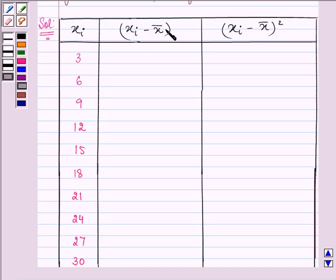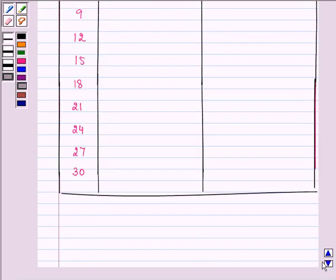Now to find out xi minus x bar, that is mean, firstly we need to find out the mean. So mean is equal to sum of xi where i is equal to 1 till n divided by n.